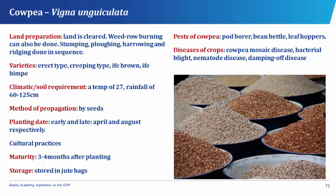Varieties of cowpea are the erect type, the creeping type, the other brown type, etc. The climatic and soil requirement of cowpea is a temperature of about 27 to 35 degrees centigrade and also rainfall of about 60 to 125 centimeters. The method of propagation of cowpea is by seeds.